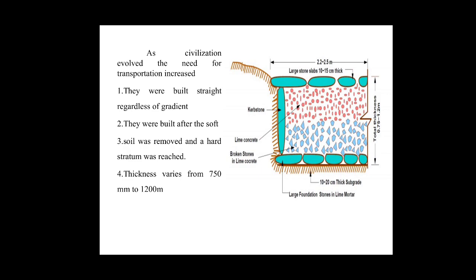The Roman method of construction was much stronger than what was actually required for animal-driven vehicles, which incorporated an unnecessarily high cost of construction that was not economical.